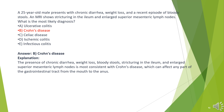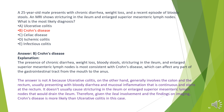The answer is B. Crohn's disease. The presence of chronic diarrhea, weight loss, bloody stools, stricturing in the ileum, and enlarged superior mesenteric lymph nodes is most consistent with Crohn's disease, which can affect any part of the GI tract. Ulcerative colitis generally involves only the colon and rectum with continuous mucosal inflammation starting at the rectum, and doesn't typically cause ileal stricturing.